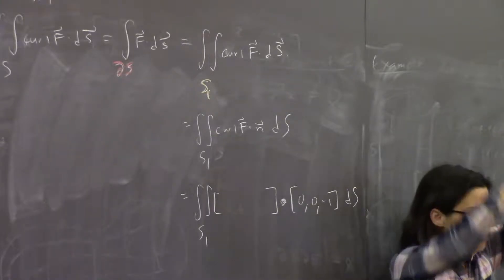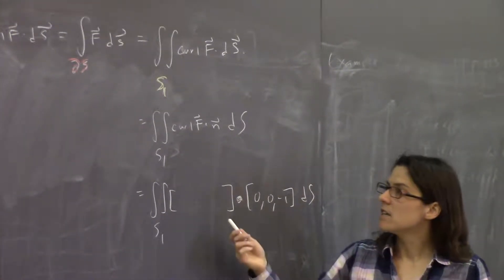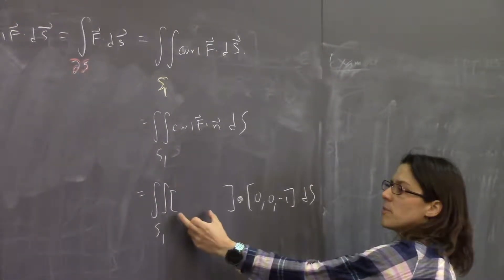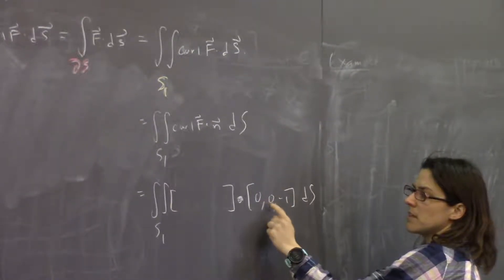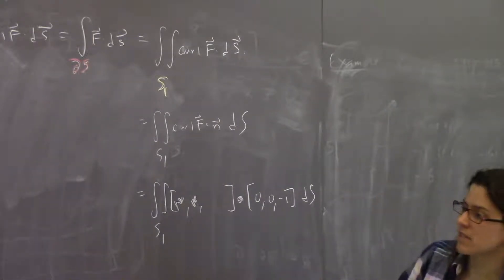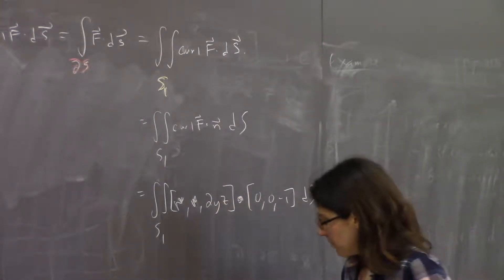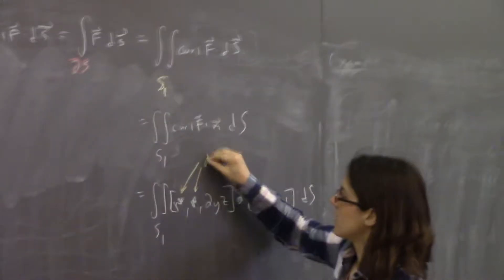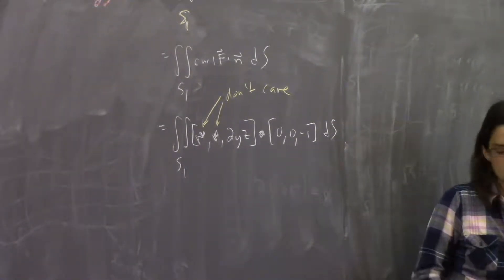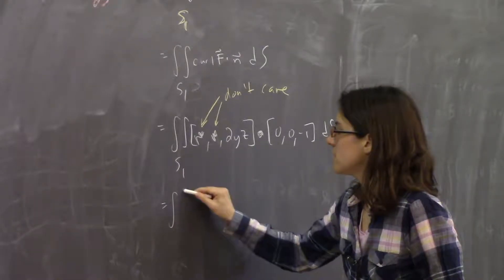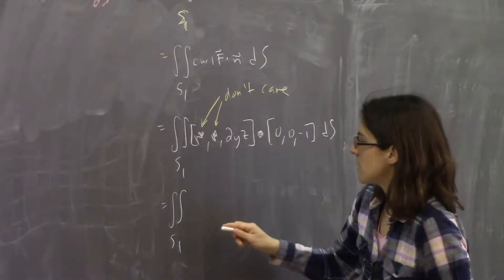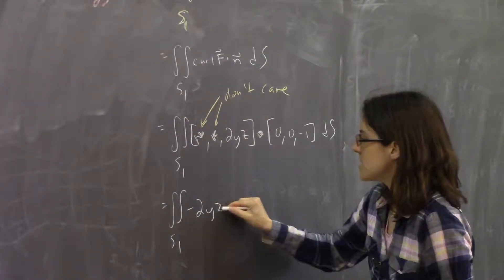Let's copy in the curl of F. The first two components are pretty complicated, but we're dotting them with 0 and 0, so it doesn't matter what they are — they're 'something, something.' And then the last component is 2yz. So this is the double integral of something·0 + something·0 + (−1)·2yz, giving us negative 2yz dS.